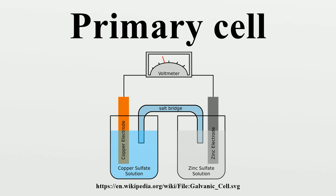As a primary cell is used, chemical reactions in the battery use up the chemicals that generate the power. When they are gone, the battery stops producing electricity and is useless.